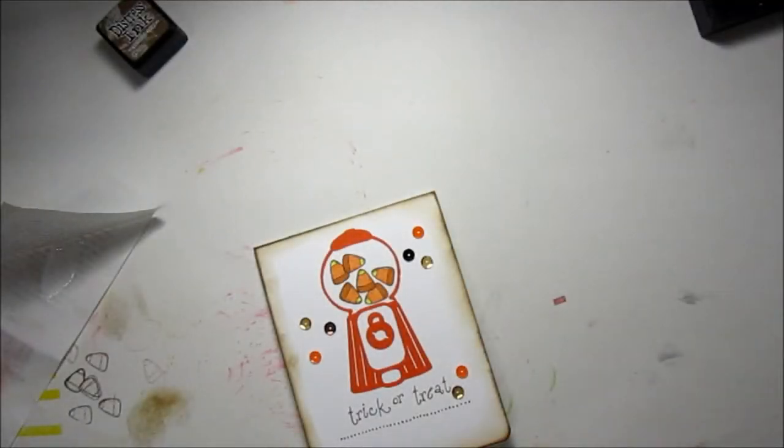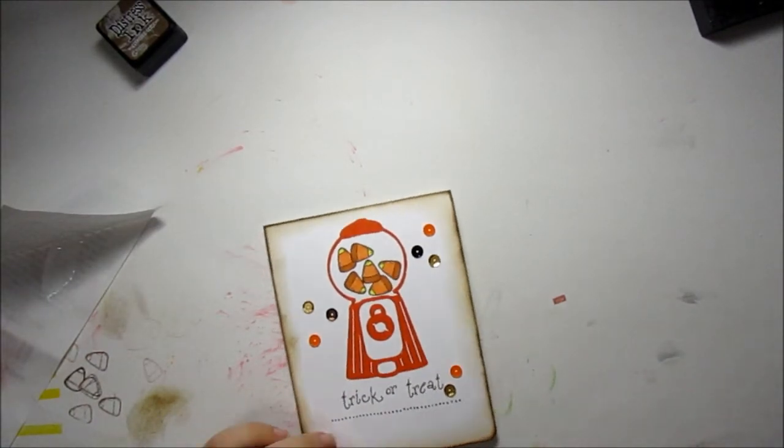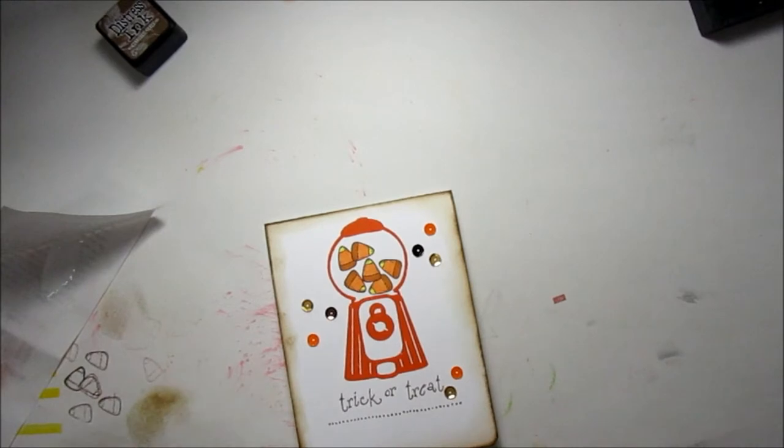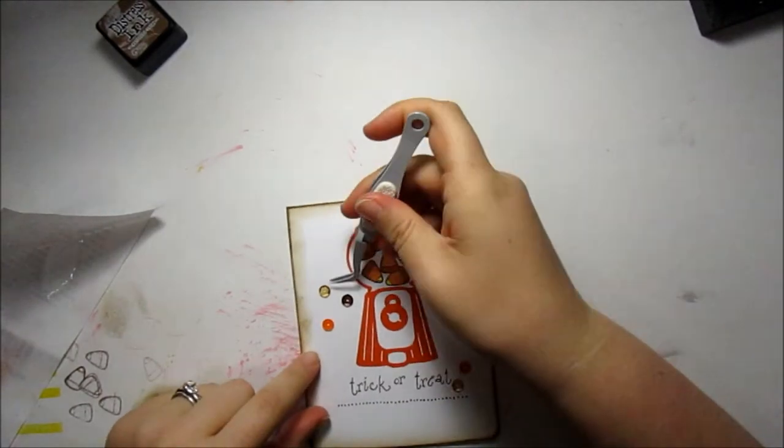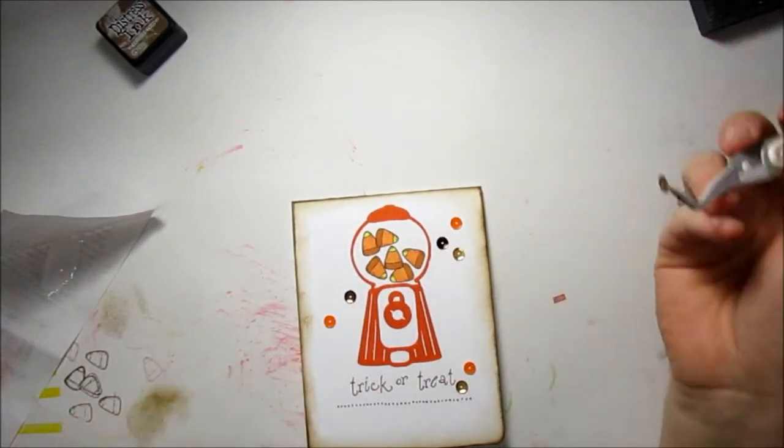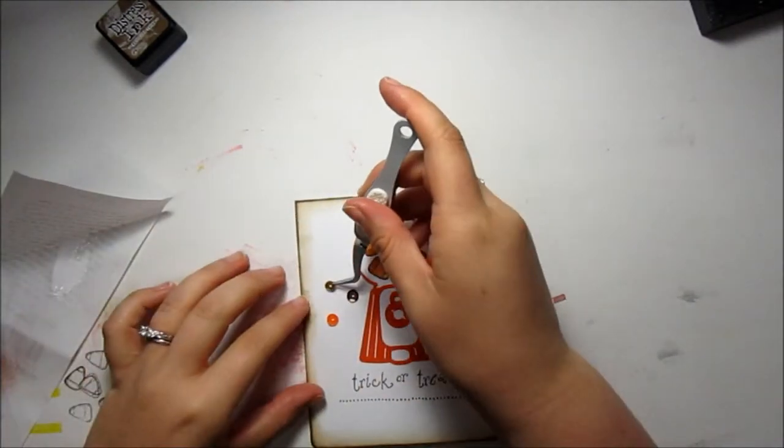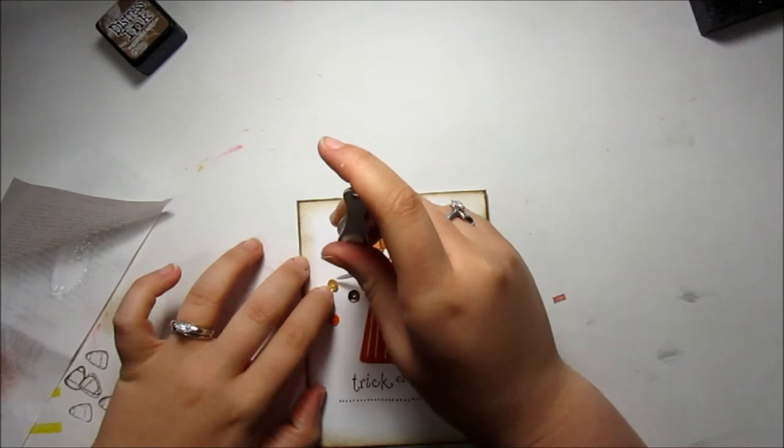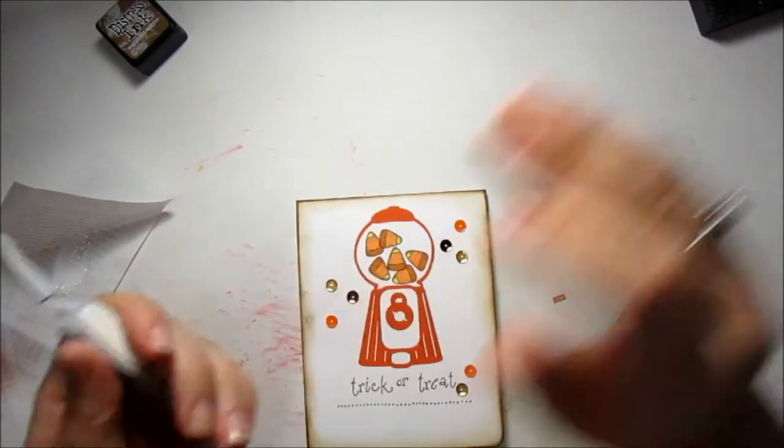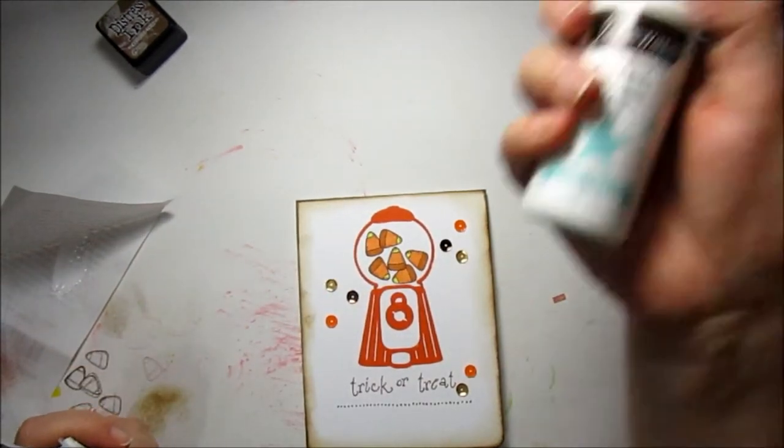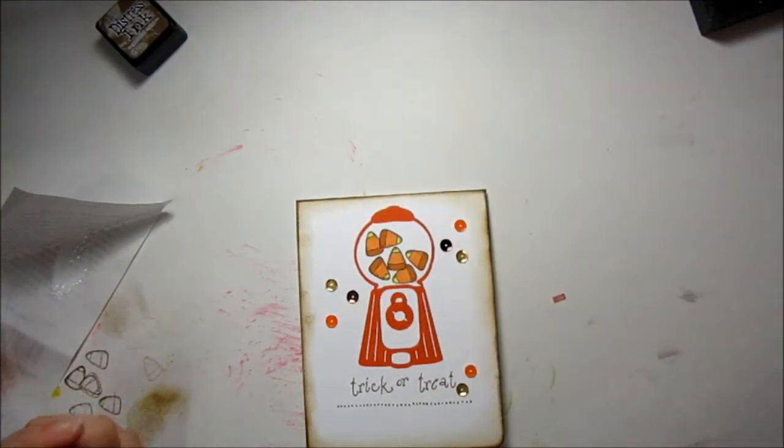So I had every intention of keeping this card a quick and simple one layer card, but as I was smudging my ink around I got some accidental smudges over here, so it's really bothering me and I need to cover it up. So I'm just going to use some sequins, and I am using the Heidi Swapp Magic Medium in Clear.